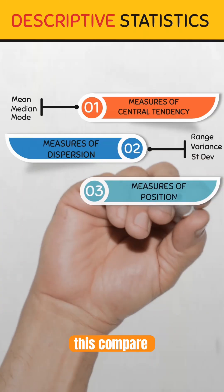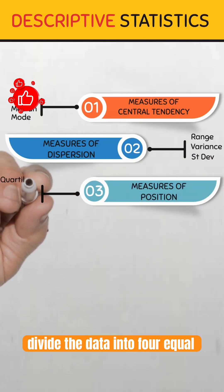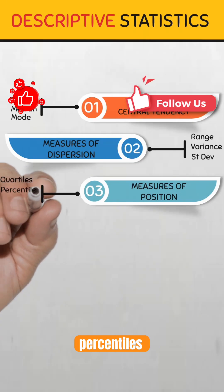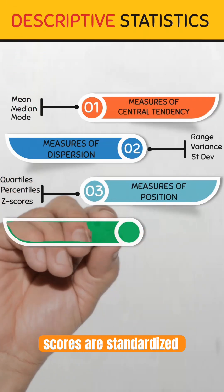Measures of position. These compare individual values within a data set. Quartiles divide the data into four equal parts. Percentiles rank the data by percentage, and z-scores are standardized scores.